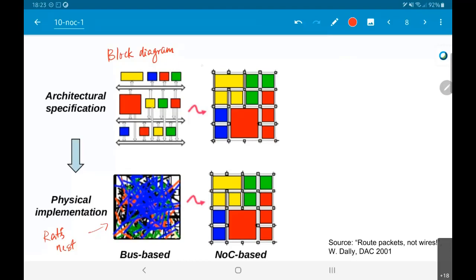What you would ideally like is that this would be the floor plan system. Why does the floor plan end up giving you this bus based physical implementation which is a mess of wires? You typically find there's some communication happening between, let's say, the blue boxes and the green boxes.